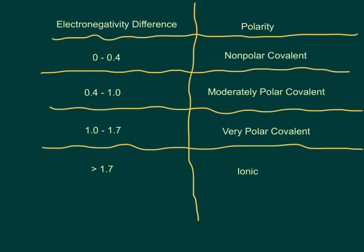How polar the bond is depends on how big the difference between the two electronegativities are. If the difference is 0 to 0.4, we say that's such a small difference that it's a nonpolar covalent bond. If it's between 0.4 and 1, we say it's fairly polar covalent. Between 1 and 1.7, it's very polar. And then if it's greater than 1.7, we say they're sharing so unequally that one atom is actually giving the electrons to the other, and we end up with an ionic bond.